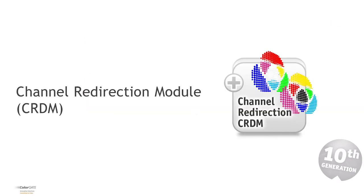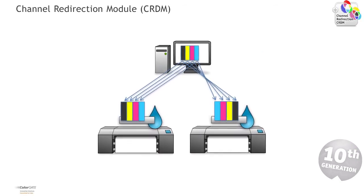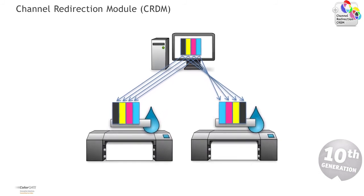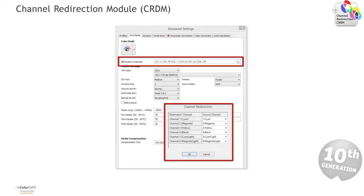The Channel Redirection Module allows the configuration of color channels to a print head based on a predefined color mode. In addition, it is now possible to redirect one color channel to multiple print heads. Until now this was only possible for the screen workflow to a limited extent, but due to customer feedback, it has been enabled also for production and proof workflow. This allows users to utilize printers with a different ink arrangement, for example for digital textile printing. The Channel Redirection Module is optionally available for all Production Server and ProofGate 10 product versions.